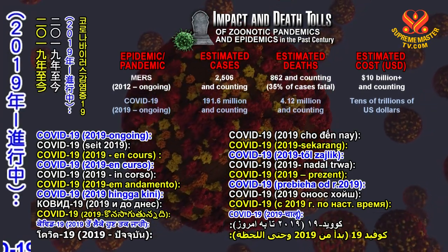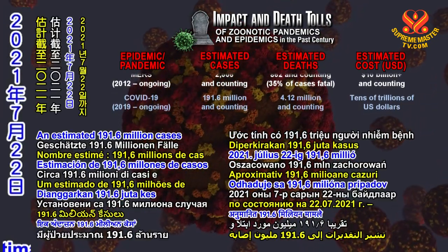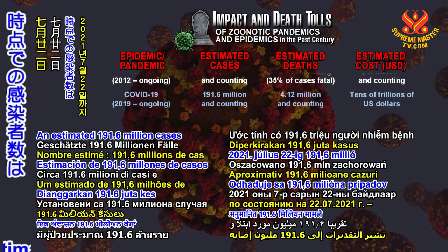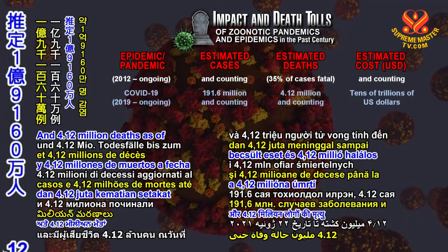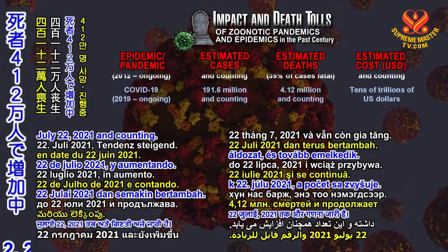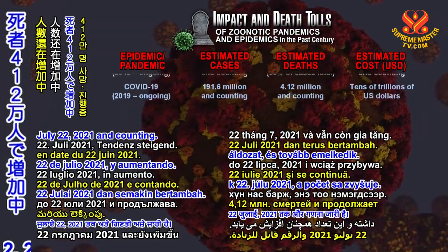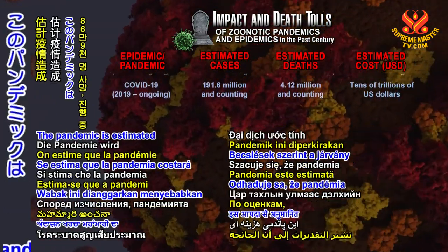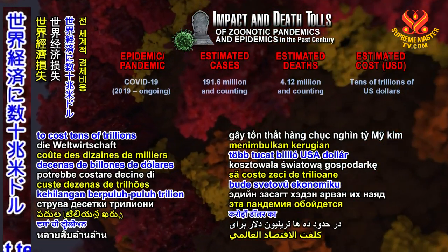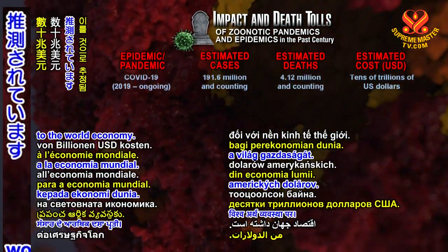COVID-19, 2019 to ongoing: an estimated 191.6 million cases and 4.12 million deaths as of July 22, 2021 and counting. The pandemic is estimated to cost tens of trillions of U.S. dollars to the world economy.